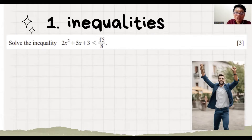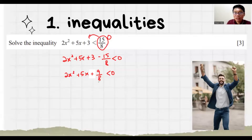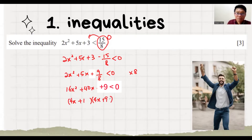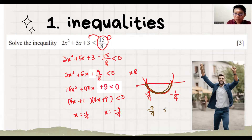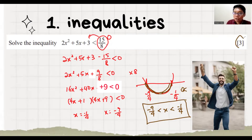We try one more question. We need to ensure one side is 0, so we throw 15 over 8 to the left. To remove the denominator, we multiply the whole thing by 8. Then we do factorization. This is an inequality, so we confirm it's a u-shaped graph. Minus 9 over 4 is smaller, minus 1 over 4 is larger. Less than 0 means below the x-axis — that's the region in between. So x is between these two values, with the sharp point pointing to the smaller value, and no equal sign. That scores 3 marks.